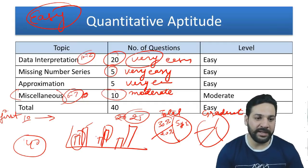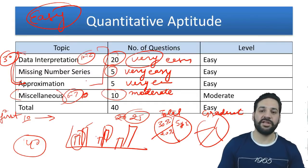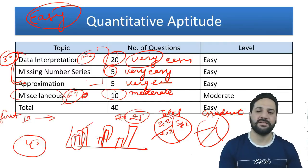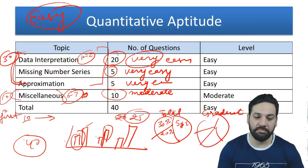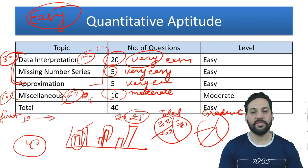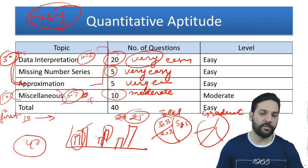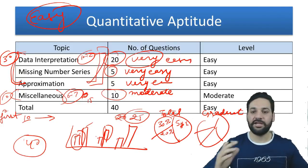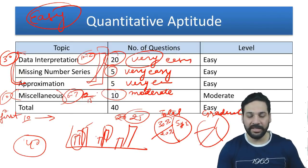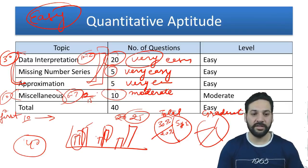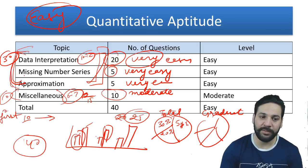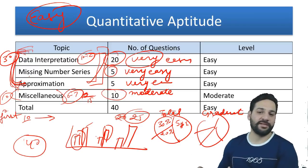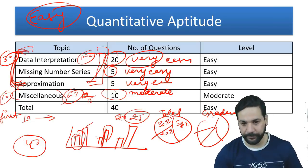If you spent 20 minutes on DI, missing series, and approximation, you could attempt 30 questions with about 90 percent accuracy — giving you 26 to 27 marks. But if you spent only 10 minutes there and the rest on miscellaneous, you'd get at most 14 to 15 marks. So this is smart work: spending more time on these three easy topics gets you 25 plus marks, otherwise you may score less than 15.